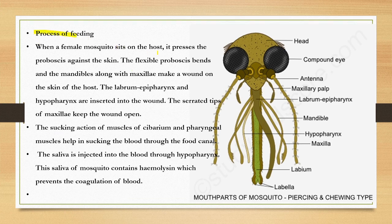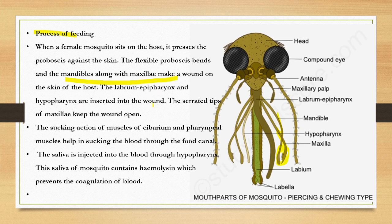When a female mosquito sits on a host, it presses the proboscis against the skin. The flexible proboscis bends back. The mandibles along with the maxillae make a wound in the skin. The labrum-epipharynx and hypopharynx are then inserted into the wound. The serrated tips of the maxillae help the wound to open.